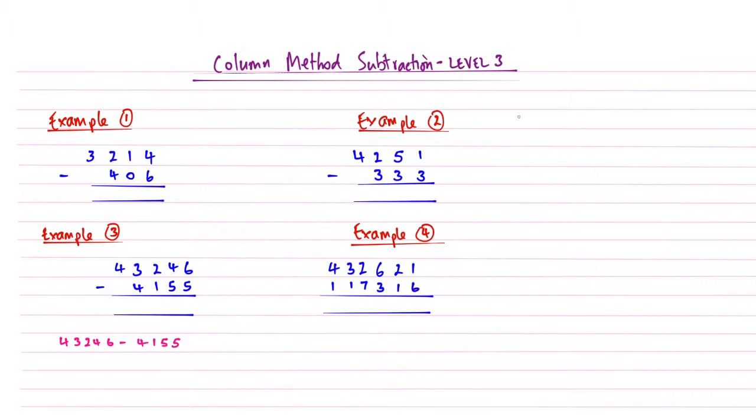Just to recap from level 2: what we learned in level 2 is what happens when we have a number in any column that's smaller than the one underneath it. So as we can see on the first one, this is just a recap from level 2 subtraction.